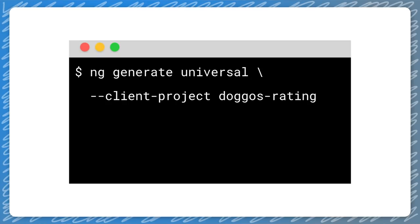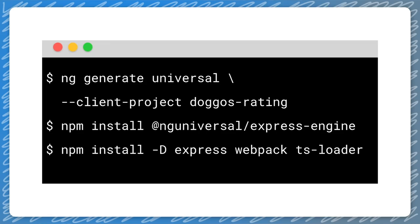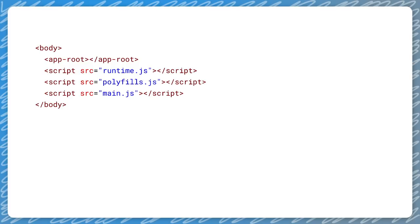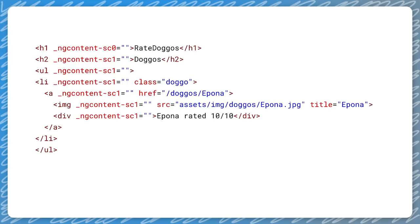To set up Angular Universal for our web app, we add the Universal module and generate a Universal app based on our existing web app. Then we need to make sure the server runs the Universal app. If you use Express for your server side, you can use the Express engine to do so. Now we start the server and can see the difference in the HTML sent from the server to the client. Here is the version before we used Angular Universal, and here it is after. Users and crawlers now get the content faster and without needing the JavaScript.